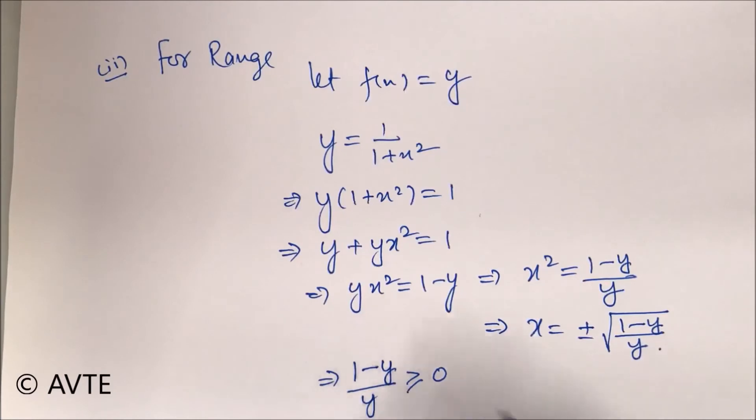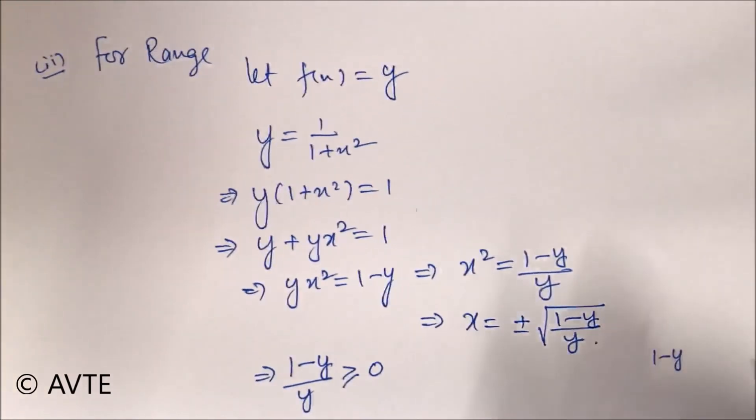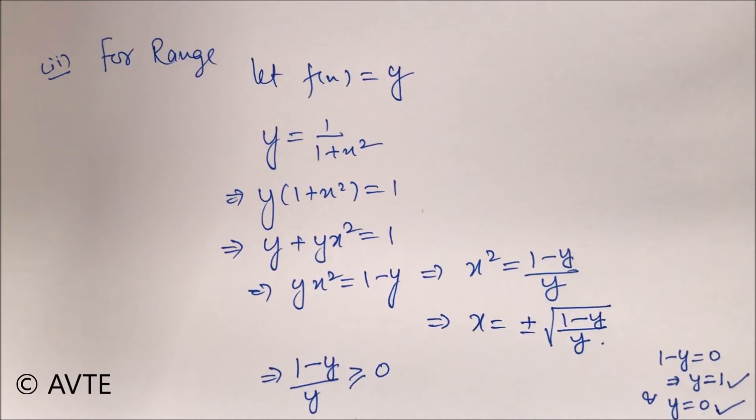Now we have to find the critical point. So for finding the critical points, you put 1 minus y is equal to 0. With that, you get y is equal to 1 and you also put y equals to 0. That is the denominator. You put denominator is equal to 0. So with that, you get two critical points as 1 and 0.